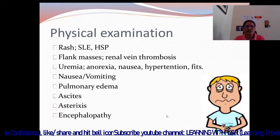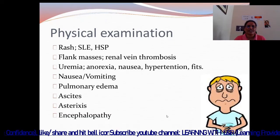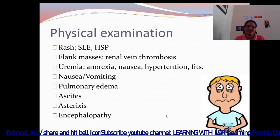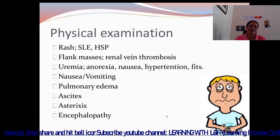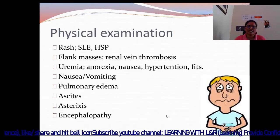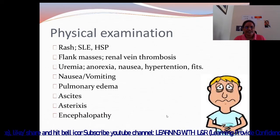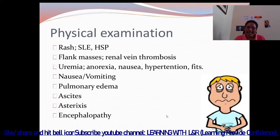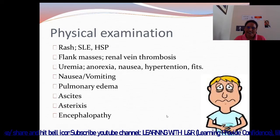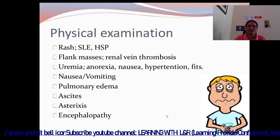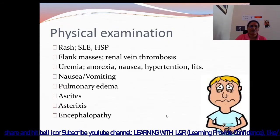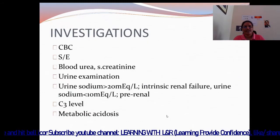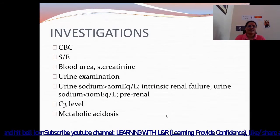Uremia features include anorexia, nausea, hypertension, fits, nausea and vomiting, pulmonary edema, ascites, asterixis, and encephalopathy, all present in patients suffering from acute renal failure.